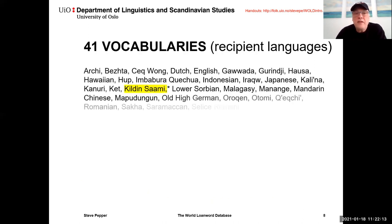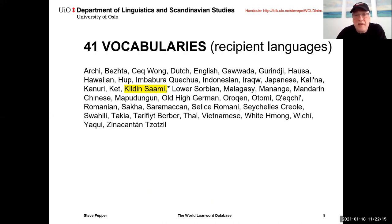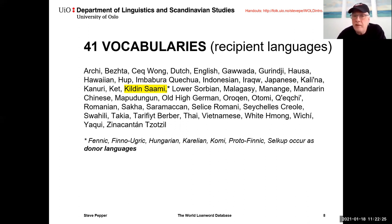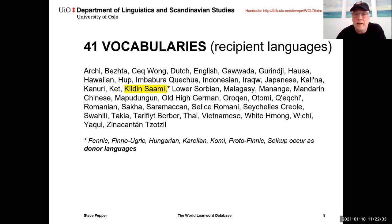These are the 41 vocabularies — that's to say the recipient languages represented in the database. You'll see that there is only one Uralic language among them, but a number of other Uralic languages — Fennic, Finno-Ugric, Hungarian, etc. — are represented as donor languages, and we'll see some of those later on.